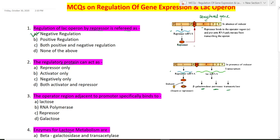Next question: the regulator protein can act as — repressor only, activator only, or both activator and repressor? In lac operon, this regulatory gene functions as an inhibitor because it expresses and forms the repressor. However, in other operons it can also act as an activator. So the regulatory protein can act as both activator and repressor — option D is correct.